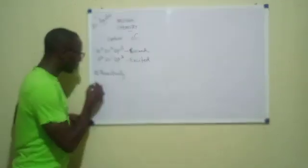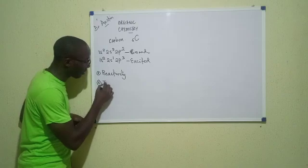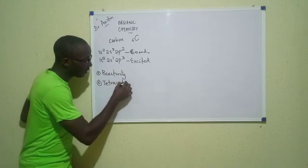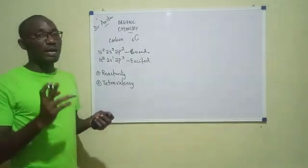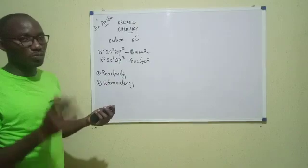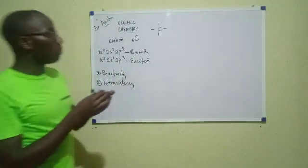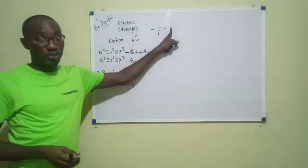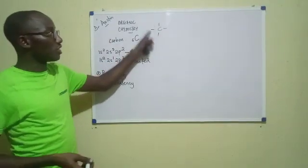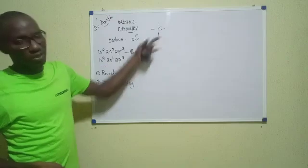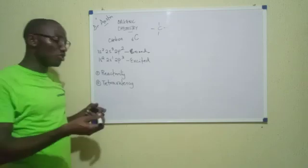As carbon combines with these elements, it does so in a very versatile manner, and that is because of a second property: tetravalency. This refers to the fact that one carbon atom can bond to four other atoms at the same time. So it could bond to four hydrogen atoms — HHHH — or combinations like HHHCl, HHHBr, or HHClCl. It can take four atoms at a time, and that increases the probability of it forming new compounds.